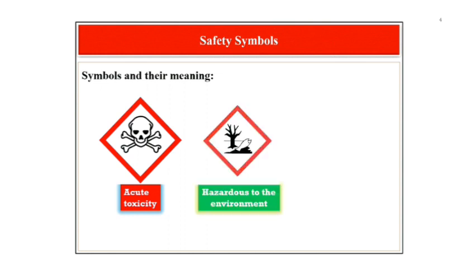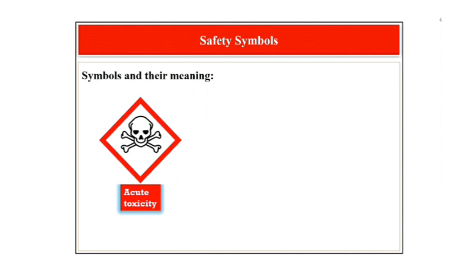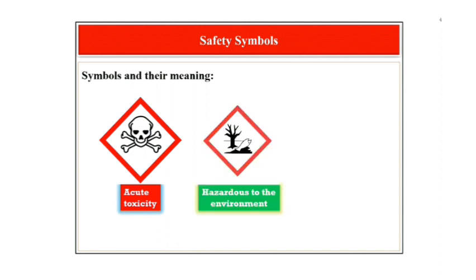The next symbol is the symbol for hazardous to the environment. This symbol includes a dead tree and fish. It indicates that these substances can cause damage to the environment and is most often used to label chemicals that are toxic to aquatic wildlife. These chemicals should be disposed of properly and ensure that they do not get washed down the drain.